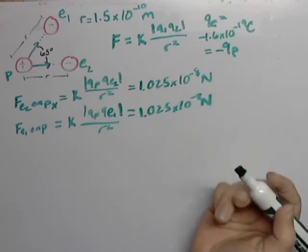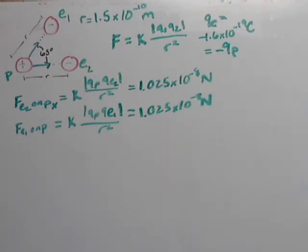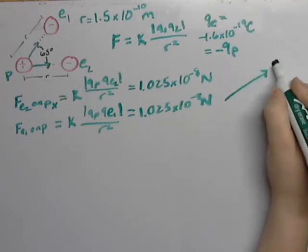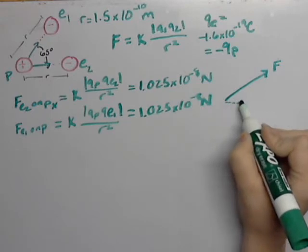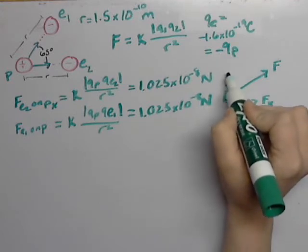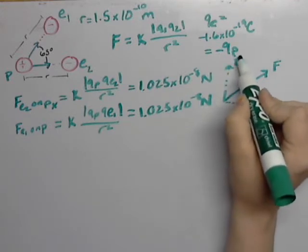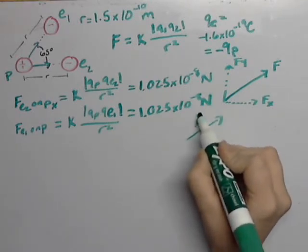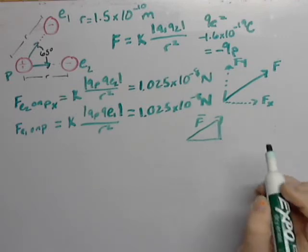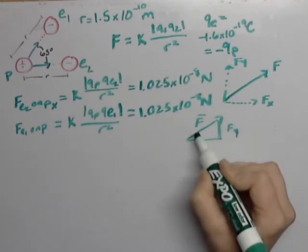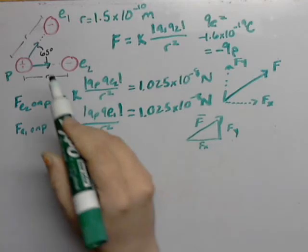The difference here is we have to break it up into components. So when we break it up into components, we're taking this f and we're going to find f of x, f of y. Or if we put it in a triangle, f, fx, fy. And here we have this angle, which is going to be our 65.